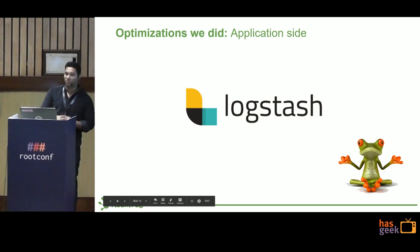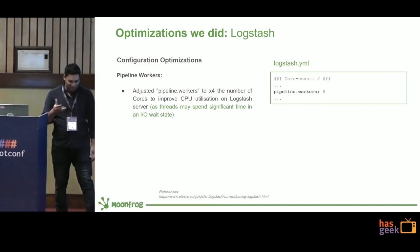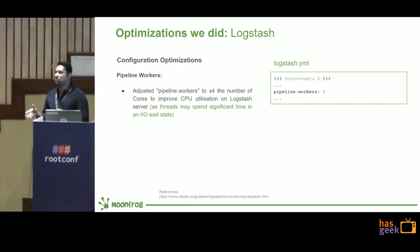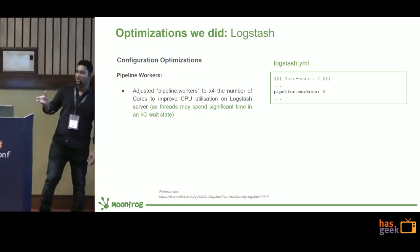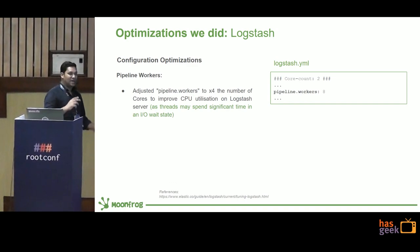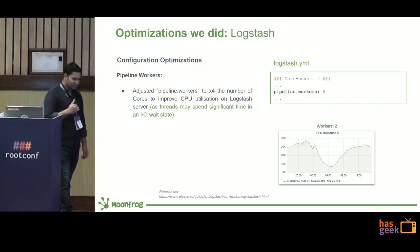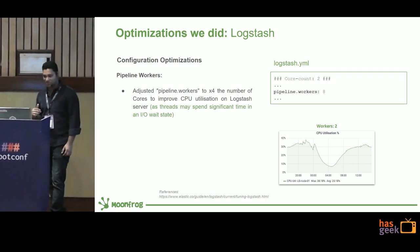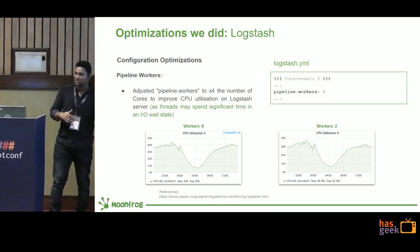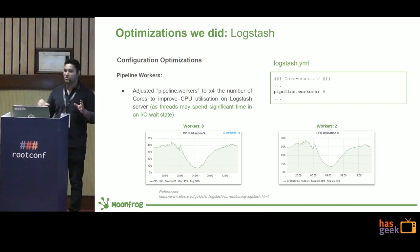Let's talk about application-side optimization for Logstash. In Logstash, you have something called pipeline workers, which is the number of threads Logstash uses for processing. By default, the number of threads equals the number of CPU cores. What we found is that increasing workers to four times the number of cores helps improve CPU utilization, as most threads spend significant time in I/O wait. For example, with workers set to 2, average CPU utilization was about 25%. When we increased to 8 — four times the cores — CPU utilization went up to 30%, and under heavy load we saw a much bigger improvement.